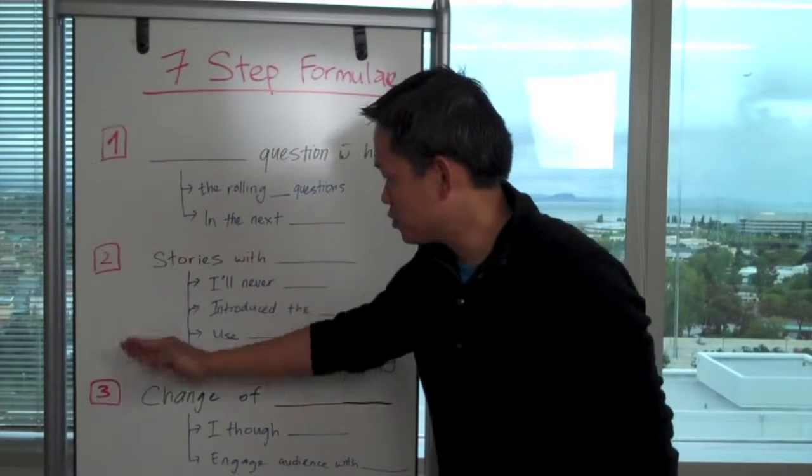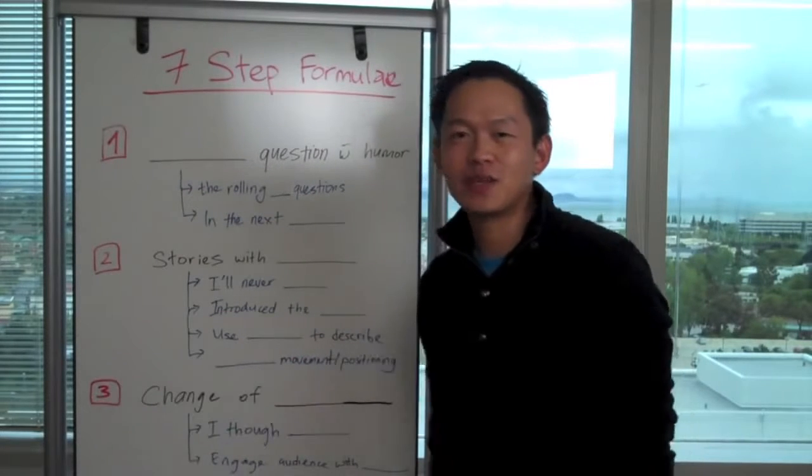There is 1, 2, 3 here. So, what is this 7-step formula all about?